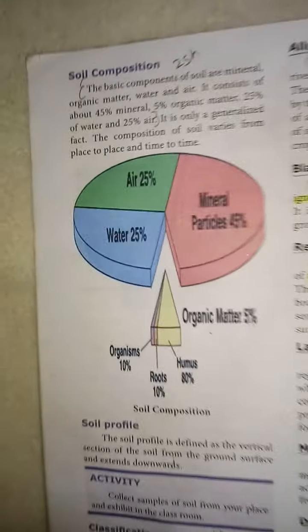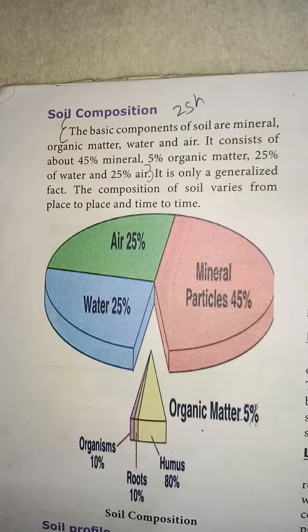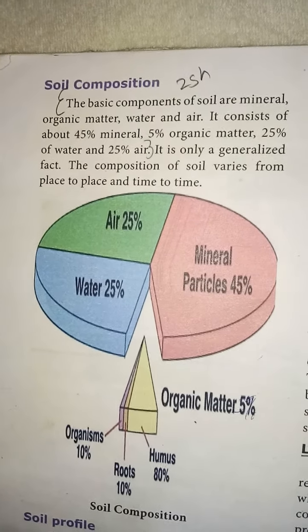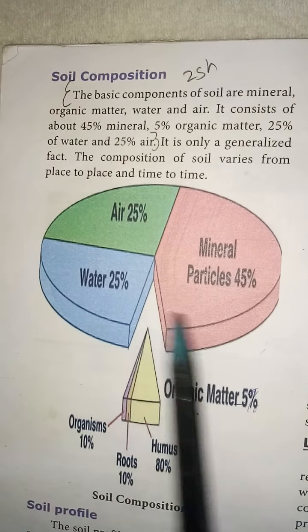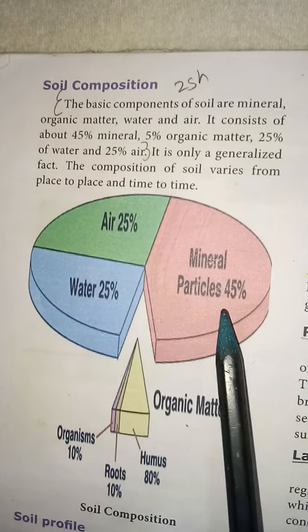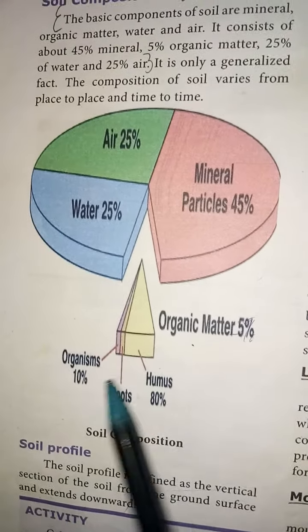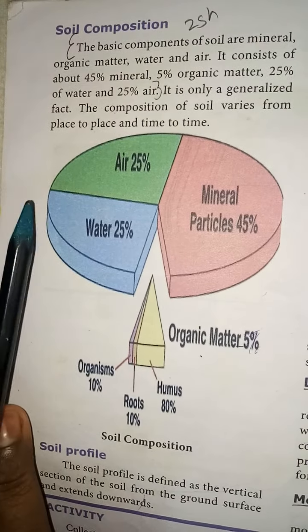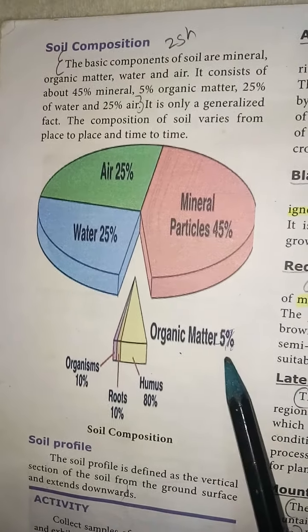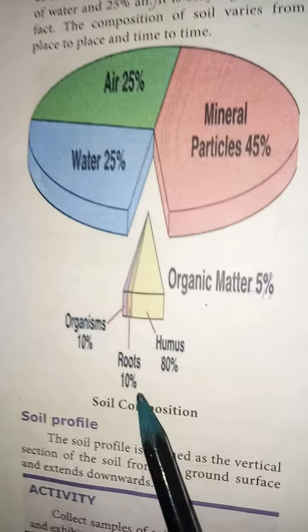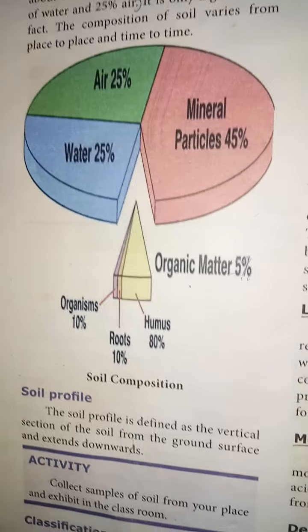Soil composition: the basic components of soil are mineral, organic matter, water and air. It consists of about 45% mineral particles, 5% organic matter, 25% water and 25% air. The organic matter — 5% — consists of organisms 10%, roots 10%, and humus 80%. This is the soil composition.